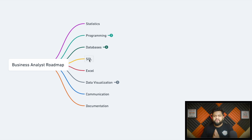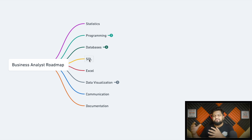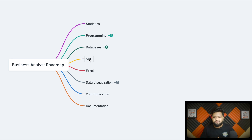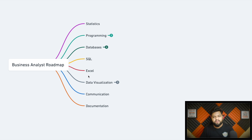Another must-have skill set — with around 50% weightage — is SQL querying. SQL is what helps you in data representation: a business analyst will program business use cases in the form of SQL queries and get the right data in the right representation. Easy-level, medium-level, and advanced-level SQL is a must-have skill set for the business analyst, so make sure you're really good at it.